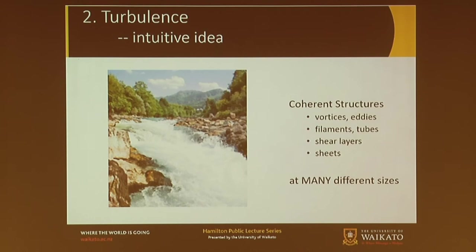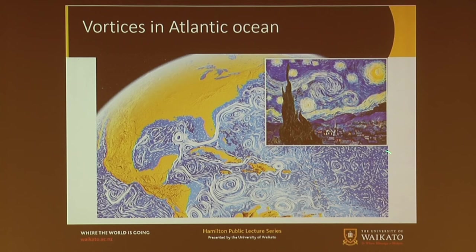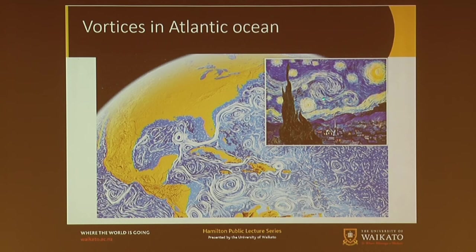There are also shear layers — regions where the top of the fluid is going faster than the layer underneath. That shear is a fundamental aspect of turbulence and how vortices get generated. Here's a visualisation of vortices in the Atlantic Ocean — you can see really large vortices near Florida and Cuba, then smaller ones, still smaller, and stretched-out filaments or tubes of vortices. The colour scale here was chosen by someone obviously familiar with Van Gogh's Starry Night painting, where Van Gogh had used his artistic genius to paint the turbulence in the night sky.